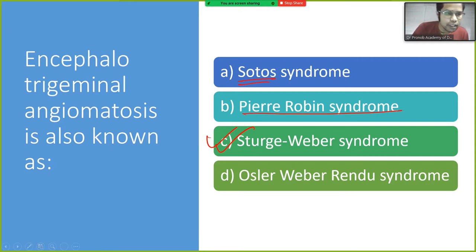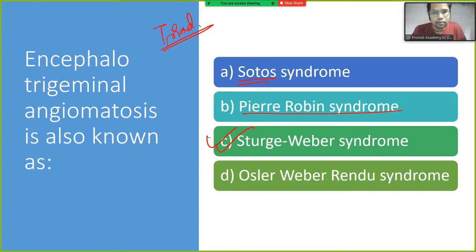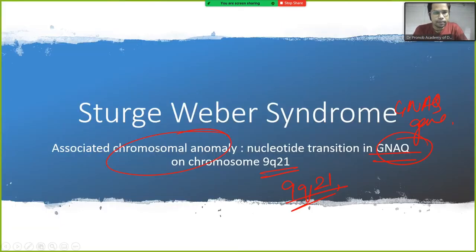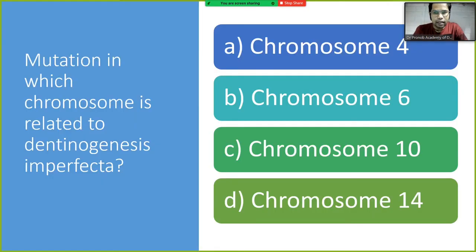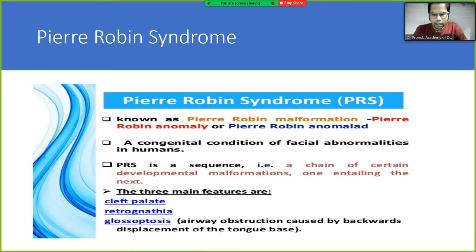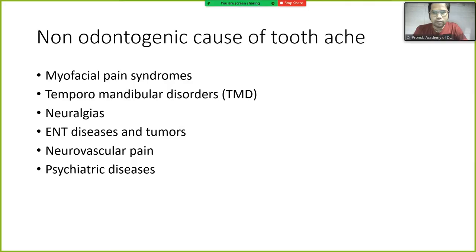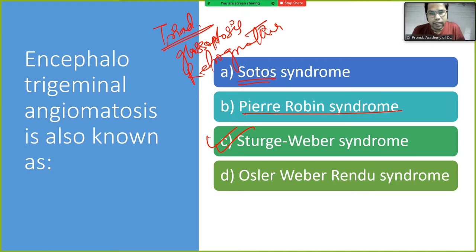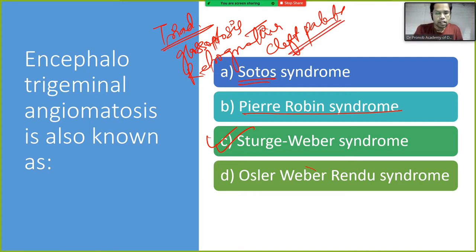Now, what is Pierre Robin syndrome? The triad of Pierre Robin syndrome is glossoptosis, retrognathia, and cleft palate. What is Sotos syndrome? What is Osler-Weber syndrome? Let's study them.